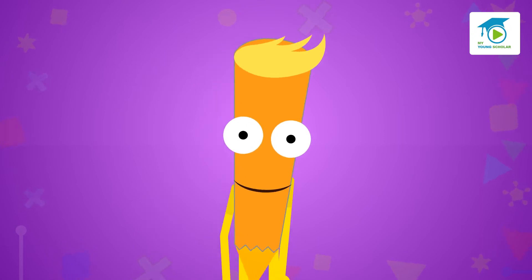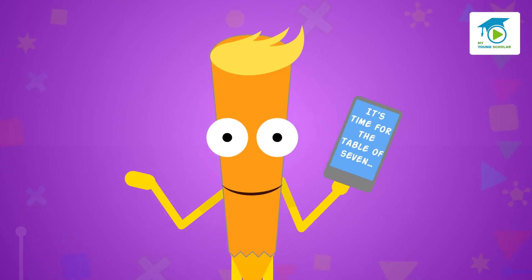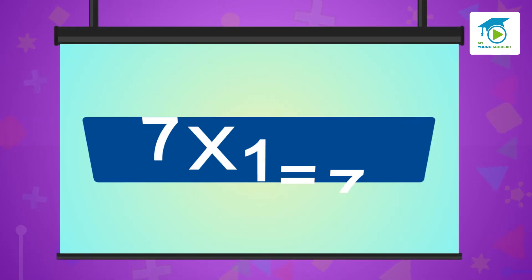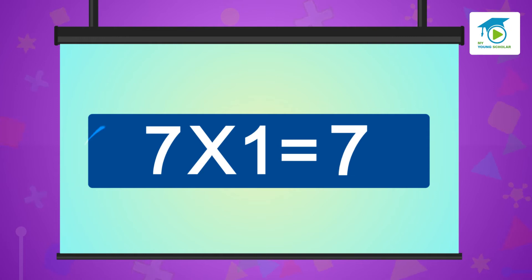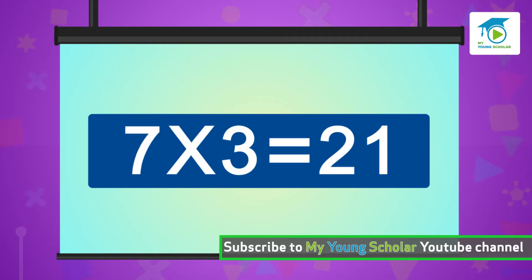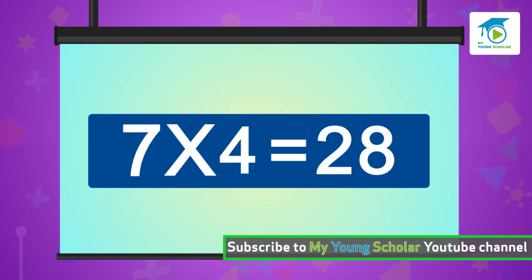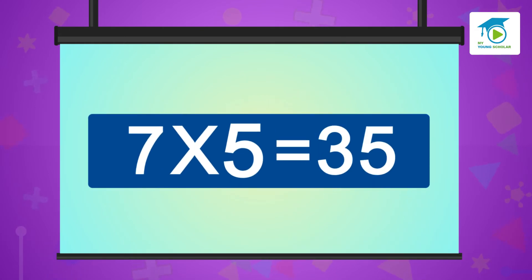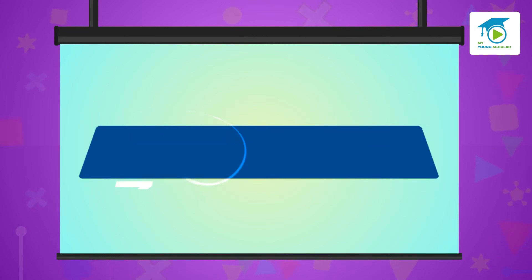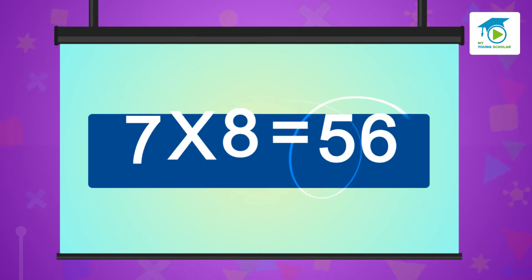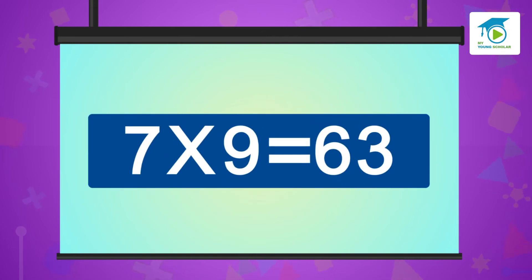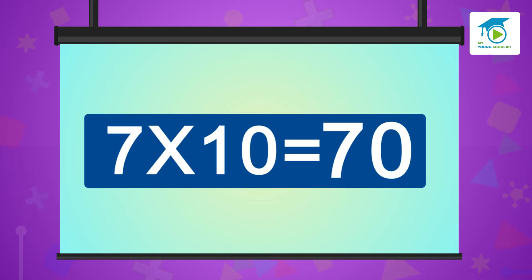Beautifully sung, it's time for the Table of Seven. Seven is fun, let's begin one by one, here we go. Seven ones are seven, seven twos are fourteen, seven threes are twenty-one, seven fours are twenty-eight, seven fives are thirty-five, seven sixes are forty-two, seven sevens are forty-nine, seven eights are 56, seven nines are 63, seven tens are 70.